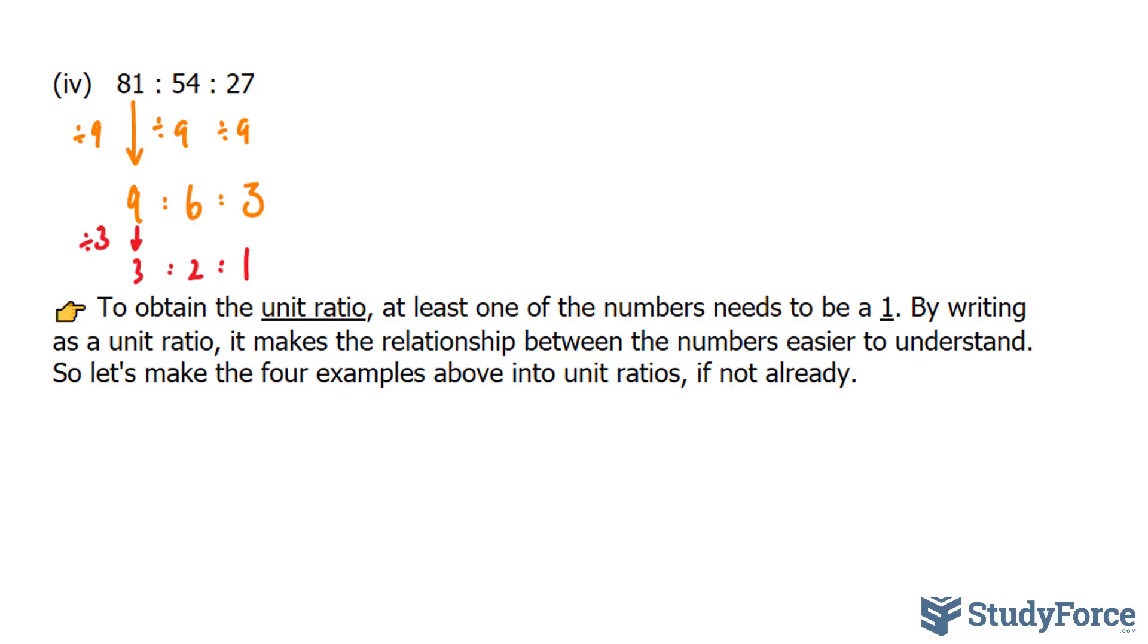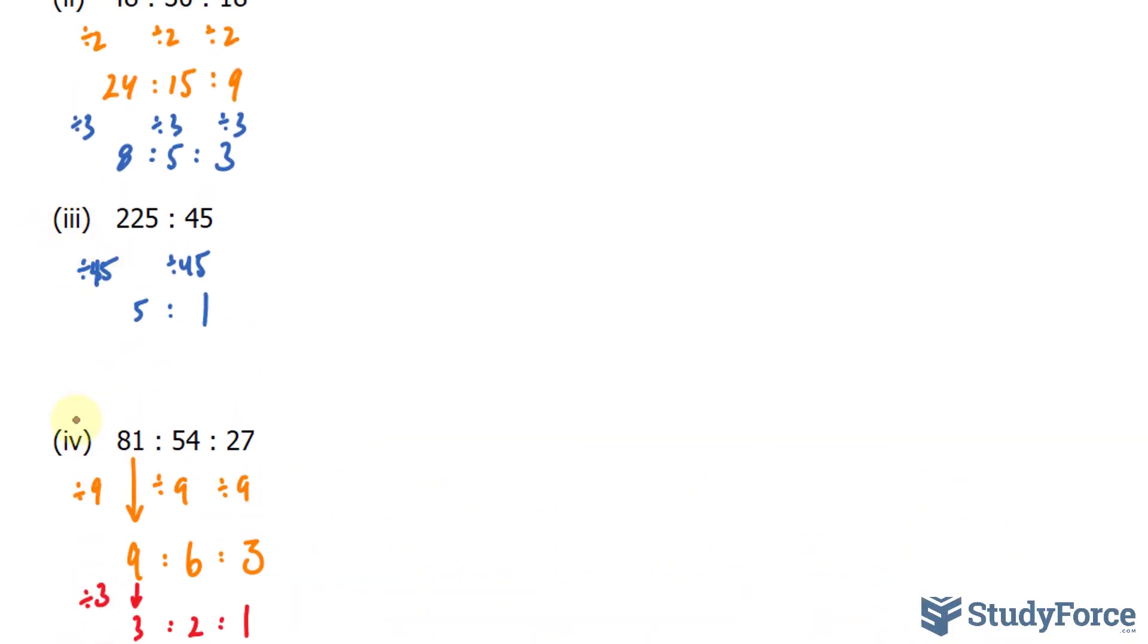Sometimes you'll be asked to find the unit ratio, and that's when at least one of the numbers in the group of numbers that are being compared is equal to 1. By writing it out as a unit ratio, it makes the relationship between the numbers easier to understand. So let's make the four examples we just did into unit ratios if they're not already. Take, for example, questions 3 and 4. We had a term that was 1 here, and we had a term that was 1 here. So these are already unit ratios.